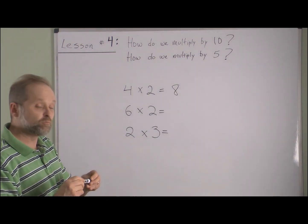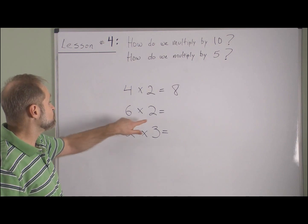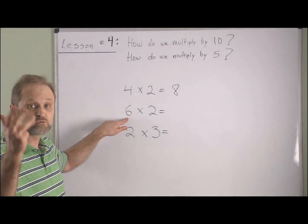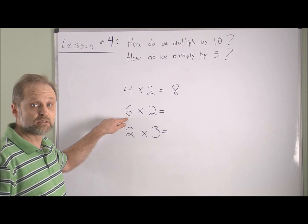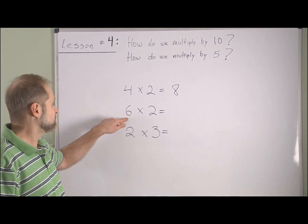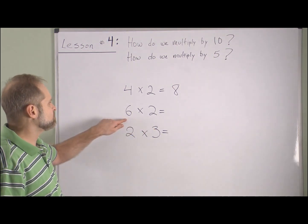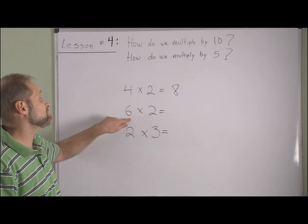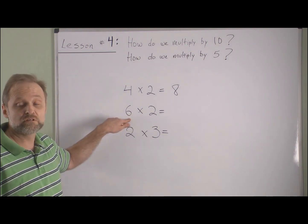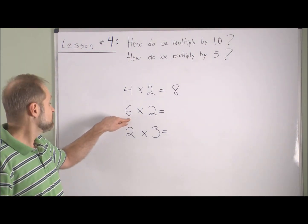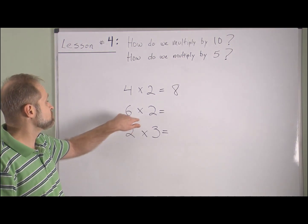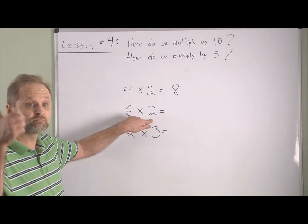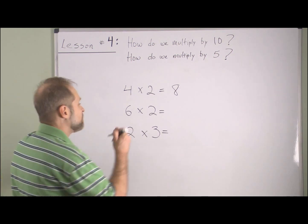With a little bit of practice, you're going to end up doing problems like this not by using your fingers, but just counting in your head silently. And after a shorter period of time following that, you'll basically just know these facts by heart. Here we have six times two — six groups of two: two, four, six, eight, ten, twelve. Six times two is twelve.